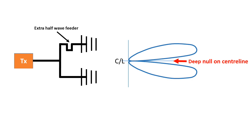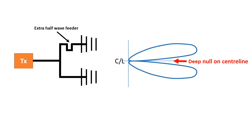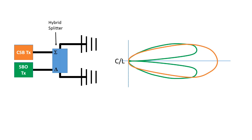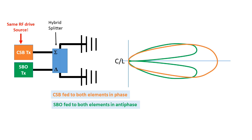In the ILS this principle is used to define the runway centreline. The two antennas are fed in phase to produce a beam carrying the CSB carrier and sideband signal. The SBO sidebands-only signal is fed to the two antennas in antiphase, which gives a deep null on the centreline — it is this null which defines the course that the aircraft follows. Both CSB and SBO are derived from the same carrier source so they form a coherent signal with space modulation in the far field. The requirement is to feed the CSB signal in phase and the SBO signal in antiphase to the two antenna elements, which can be done using a hybrid splitter.